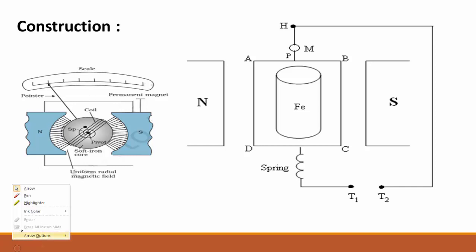The construction of the moving coil galvanometer: it consists of a rectangular coil ABCD of several turns of insulated copper wire. This coil is suspended between the poles of a powerful permanent magnet, N and S.